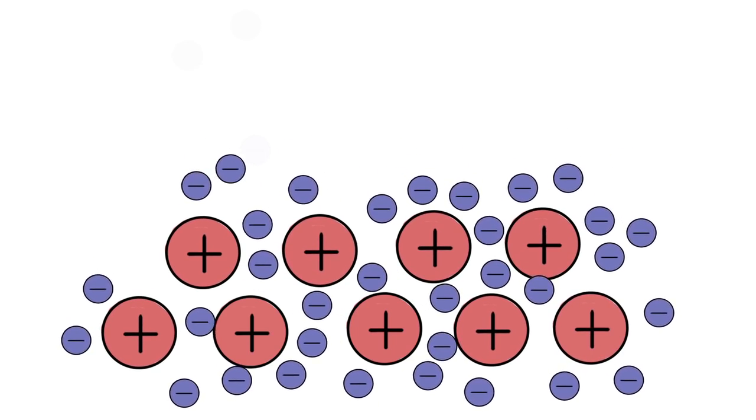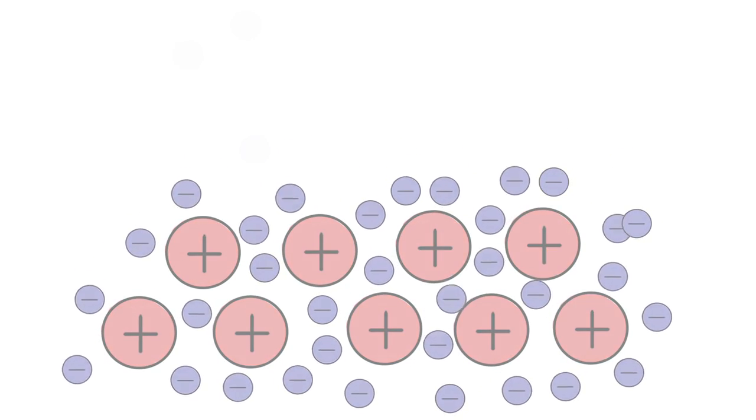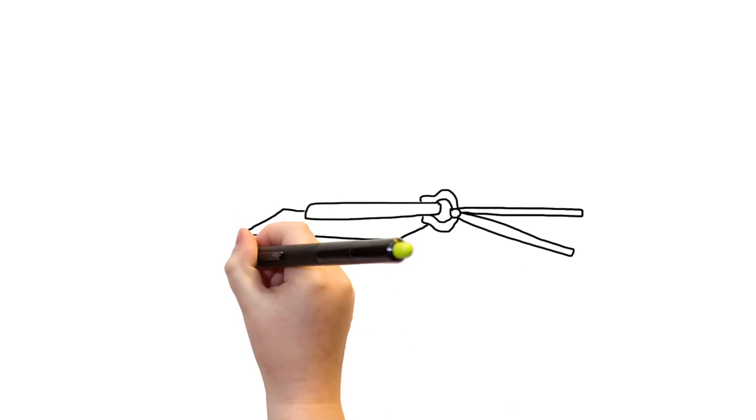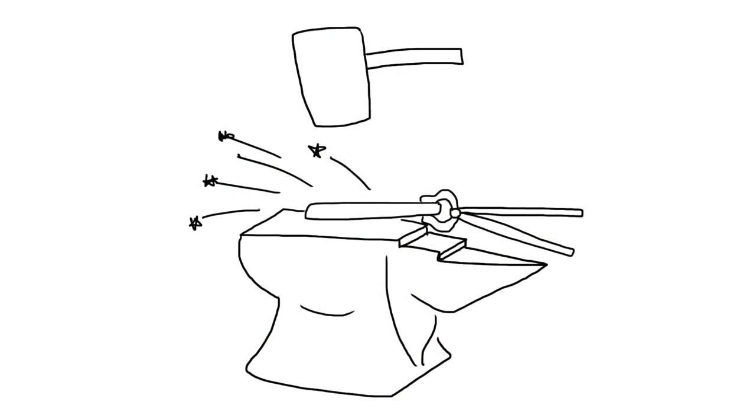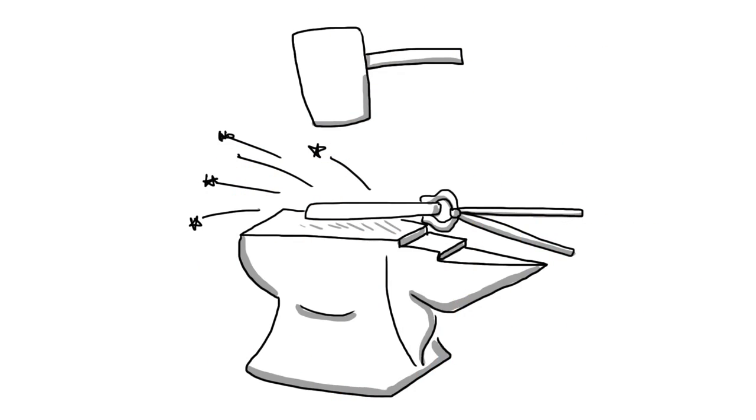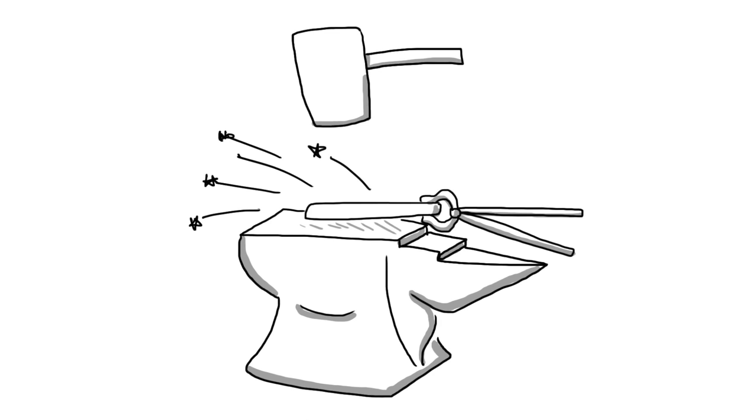By manipulating the structure of the metals and alloys, it is possible to improve their properties. This concept is not a new one. For example, blacksmiths from the middle ages knew that our metals' properties could be improved by working it with a hammer.